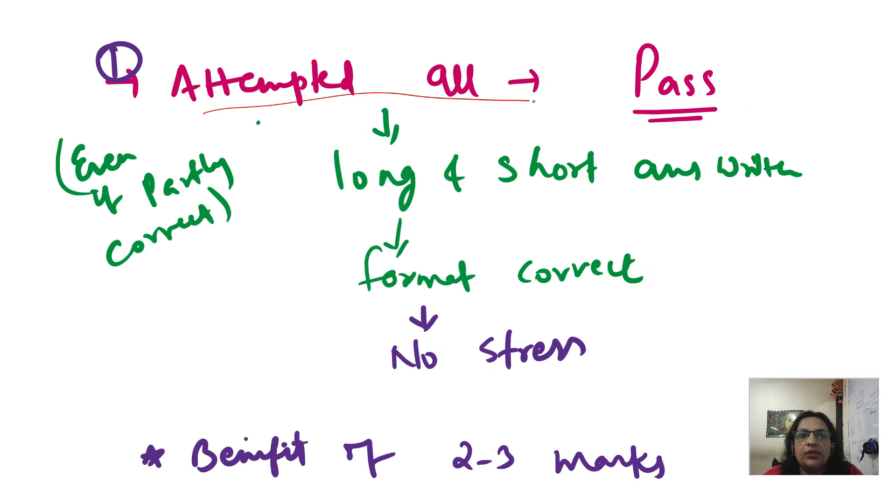Children who have attempted all the questions, the teacher would definitely pass you and give you full marks. Because it is not a board exam, it is a compartment exam. So if you are partly correct and partly is 19-20, then you will get the number.